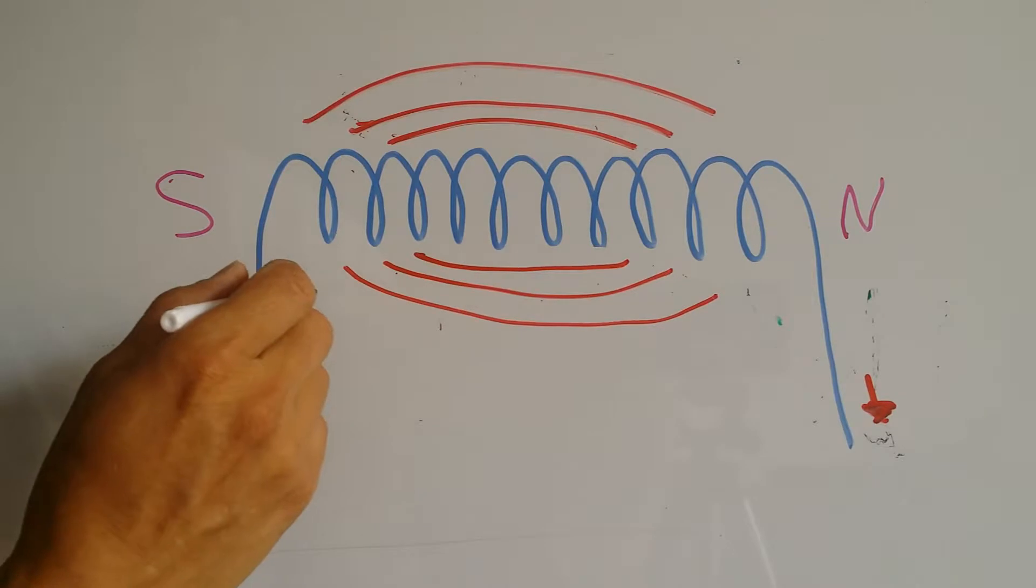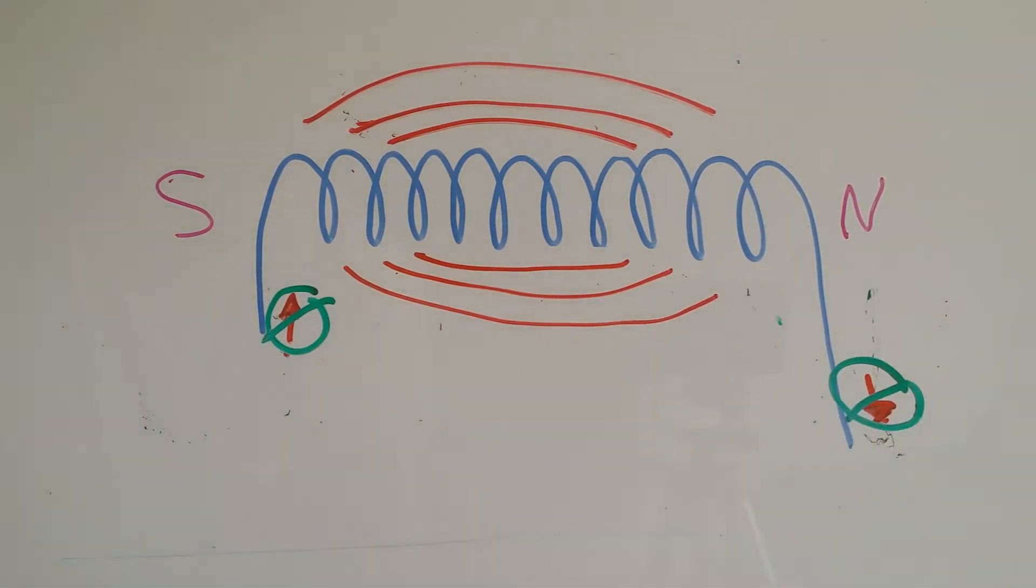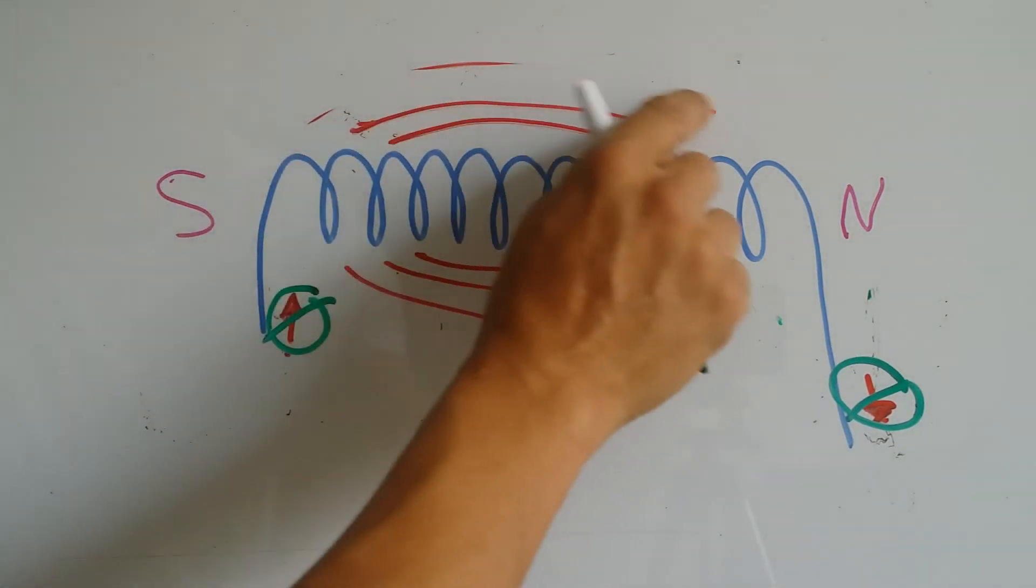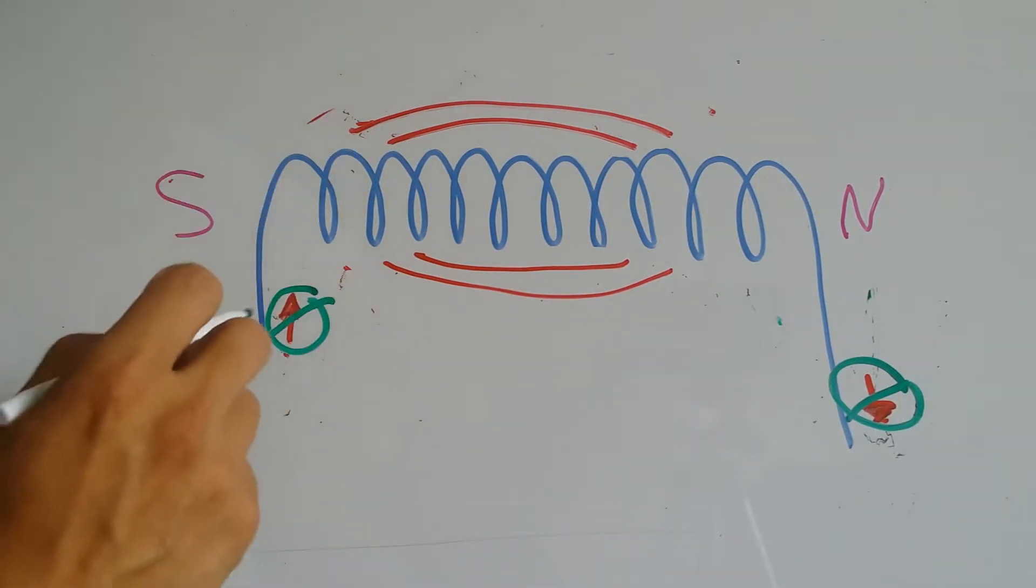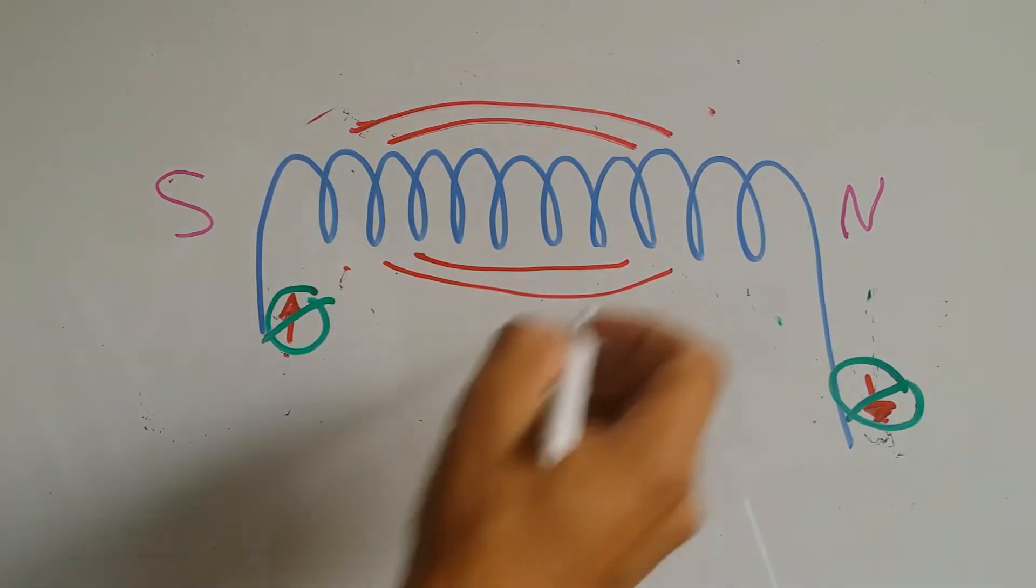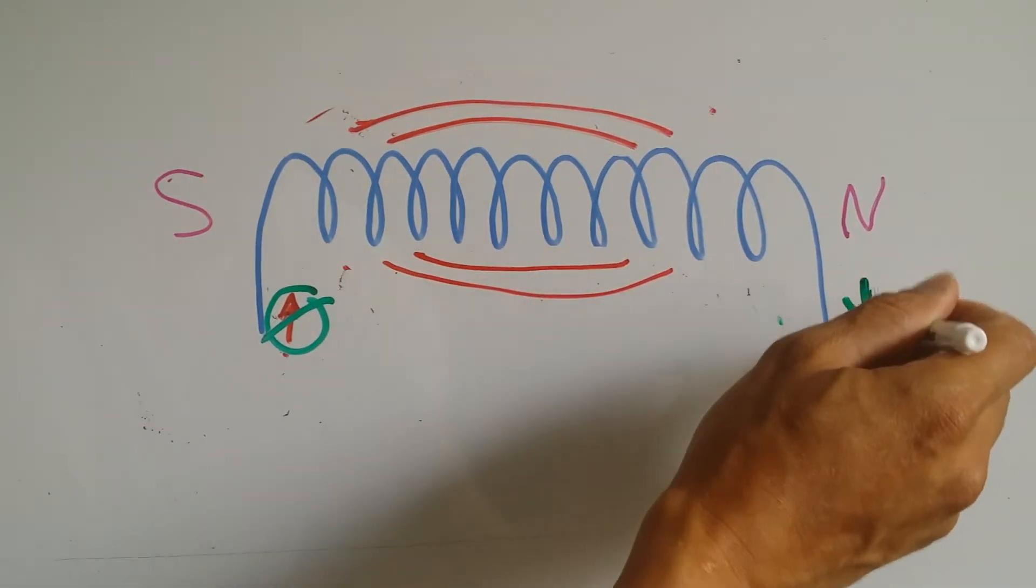If we remove the current that is creating the inductor field, what happens is that the inductor starts collapsing and as it starts collapsing, the stored energy of the field starts creating an electron flow.